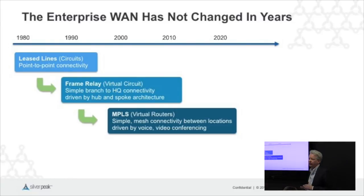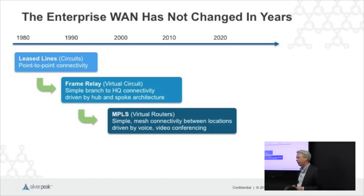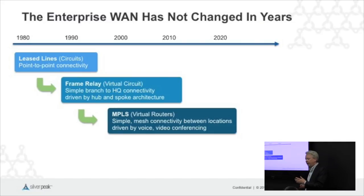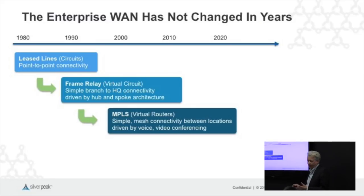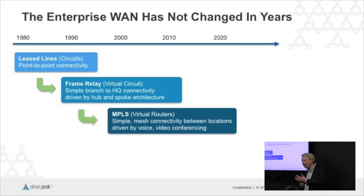Why do we think SD-WAN is a big thing? When I first moved into networking, we were moving from private lines to frame relay. I was at Stratacom and we were helping AT&T deploy the world's biggest frame relay network. That transition happened pretty rapidly — over about five years we went from no adoption to 90-something percent adoption of frame relay. Later, we were acquired by Cisco, we developed tag switching, and that turned into MPLS. Starting from about 2000, there was a rapid movement as enterprises moved from frame relay to MPLS.